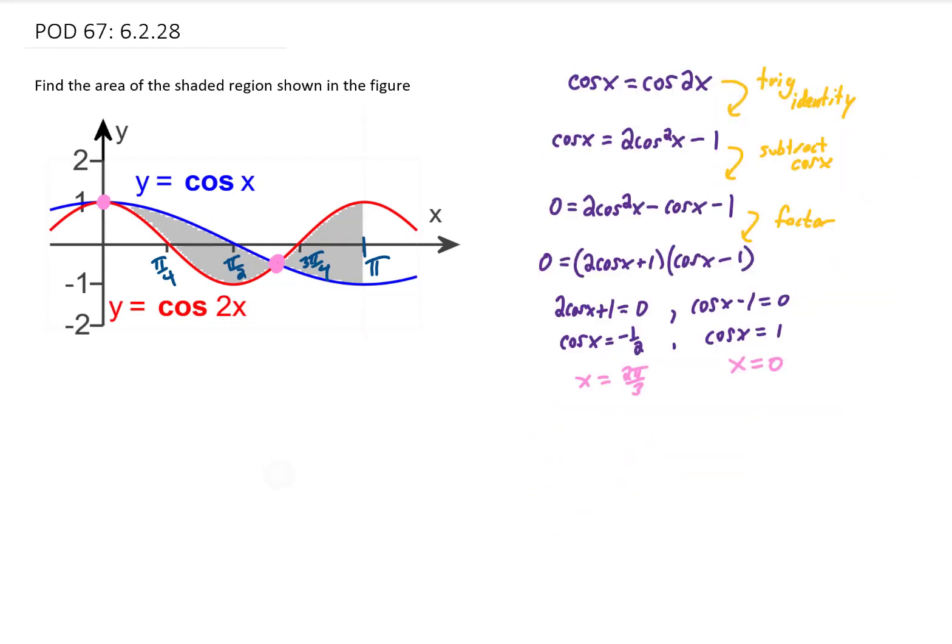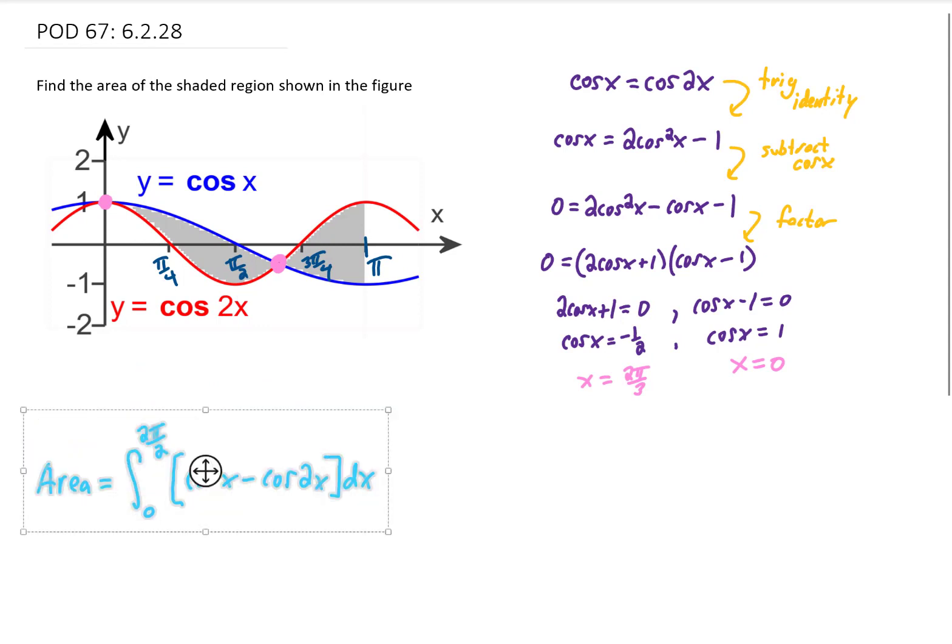we are able to set up our integral for the area of this shaded region. Our first integral is going to go from x equals 0 to x equals 2 pi over 3, and we're going to take the integral of the top function minus the bottom function. It looks like I'm going to run out of space here, so I'm going to move this down just a little bit.